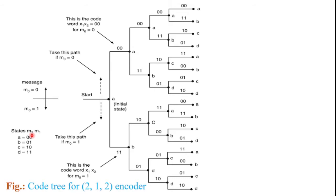Whenever a new message bit is shifted to M0, the contents of M1 and M2 define the new state. Outputs X1 and X2 are also changed according to the new state defined by M1 and M2, and the message bit M0.